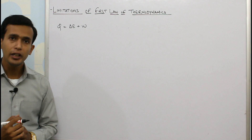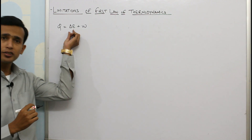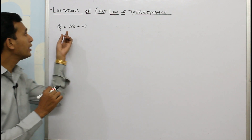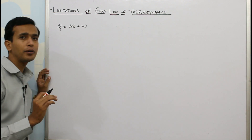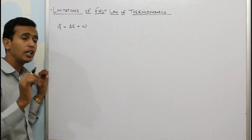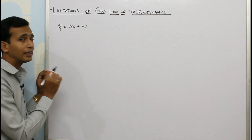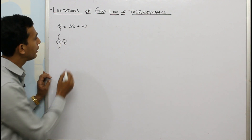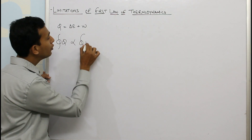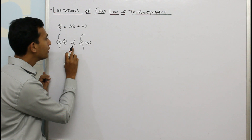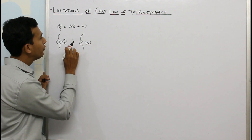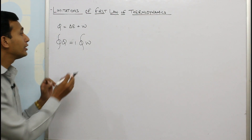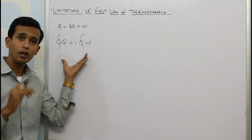For a cycle, we know the change in internal energy is zero as it is a state function — the system returns back to its original state, that's why delta E is zero. So for the cyclic process there is a different statement: the first law tells us that the amount of heat supplied over the complete cycle is proportional to the amount of work done over the complete cycle. Removing the proportionality sign and putting the constant as one — which is nothing but Joule, the unit of heat — this was all about the first law statement.